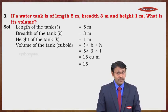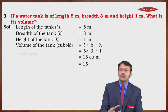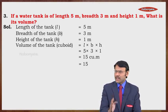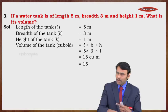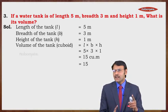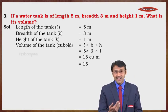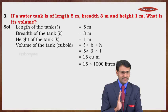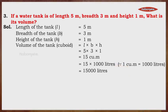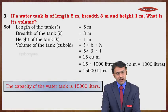Since this is a water tank, it contains water, and water is usually measured in liters. So we need to convert cubic meters to liters. Remember this important conversion: 1 cubic meter = 1000 liters. So if the volume is 15 cubic meters, the answer is 15 × 1000 = 15,000 liters. That is the capacity of the water tank.